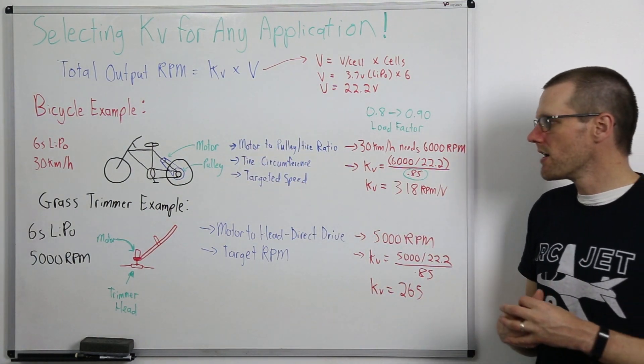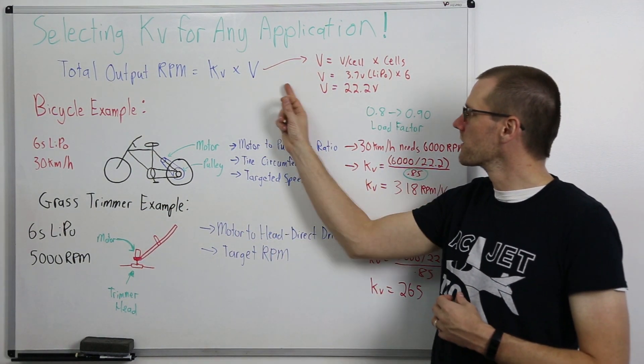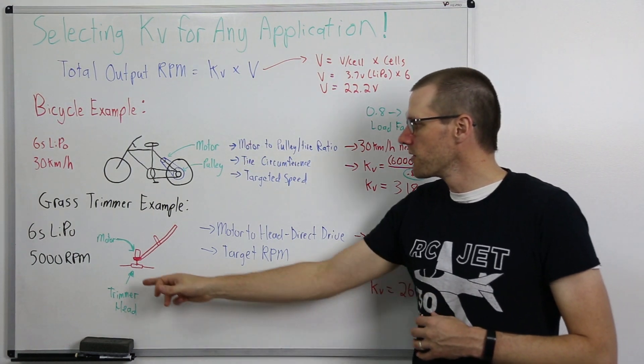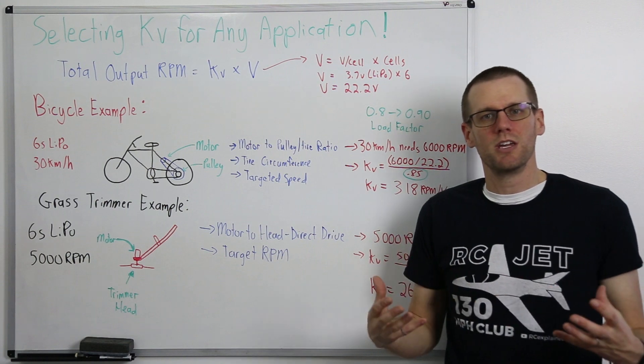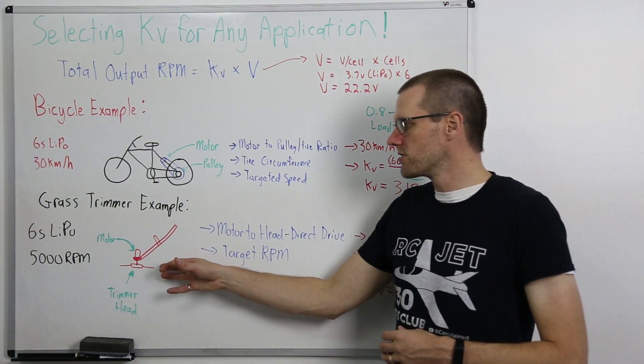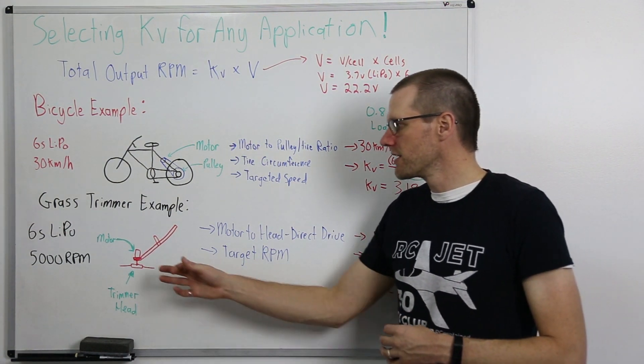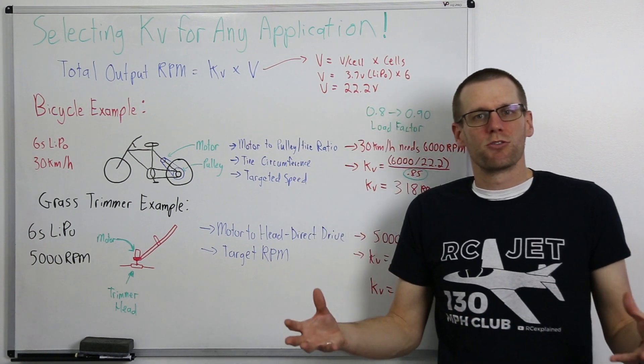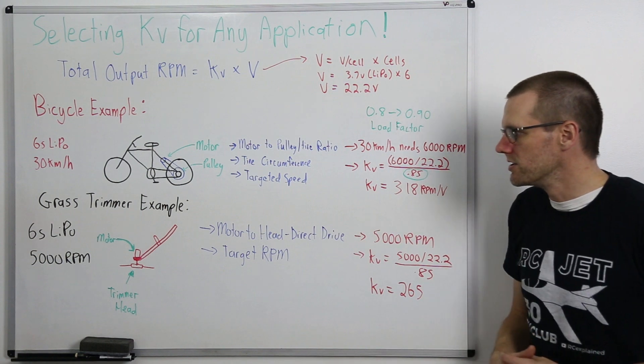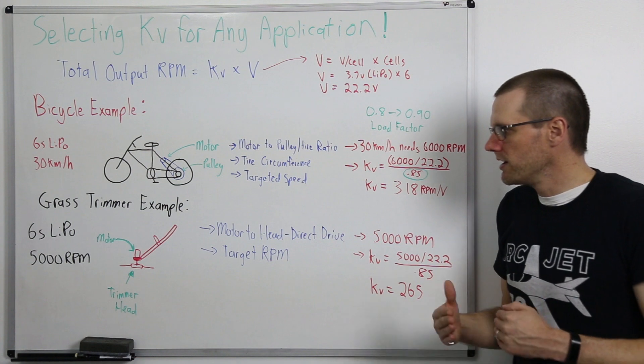So now let's take a look at our grass trimmer example. The first thing that we need to know is the voltage. We're going to continue to use our 22.2 volt battery and then we're going to understand what kind of rpm do we actually need from our grass trimmer. So what I've done is looked at other grass trimmers and find out what kind of speeds do they actually operate at and what I found is they can operate anywhere from 3,000 rpm up to about 8,000 rpm depending on what you're actually getting into.